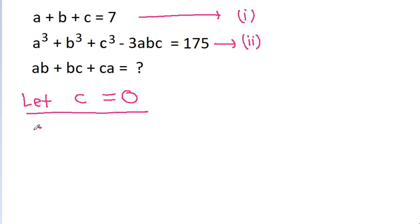Then equation 1 will become a+b is equal to 7, equation 2 will become a³+b³, and c³ will be 0 and 3abc will be also 0, is equal to 175. And this will become ab.